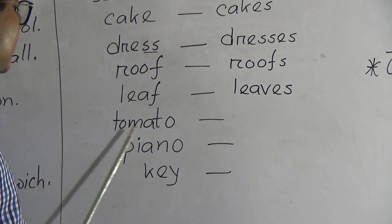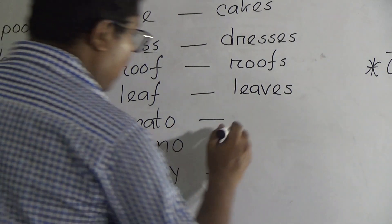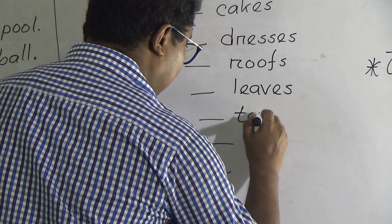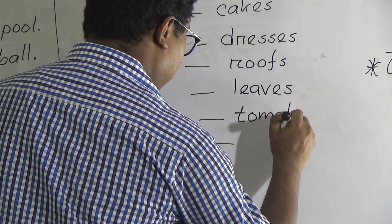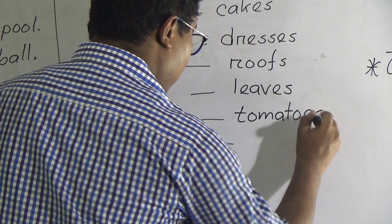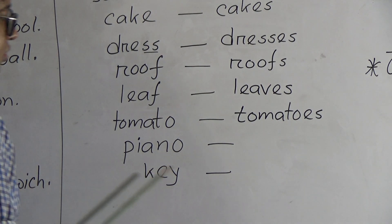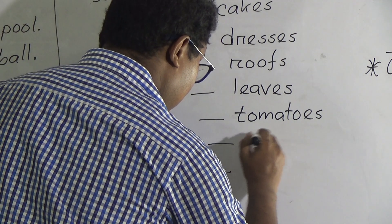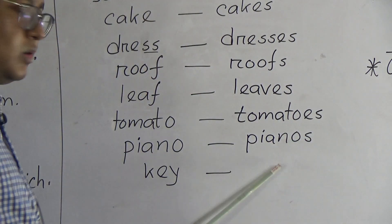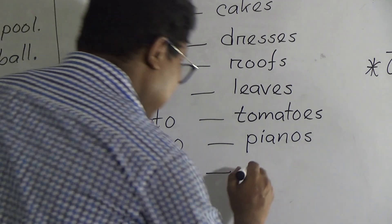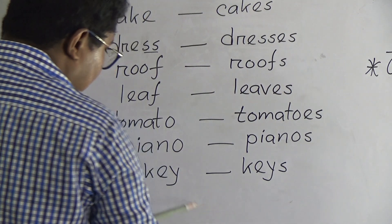Next one is 'tomato'. If a word ends with O, we have to add ES after the noun. So tomato becomes 'tomatoes' — T, O, M, A, T, O, E, S. Next one is 'piano' — 'pianos', P, I, A, N, O, S. Piano, pianos. And 'key' — 'keys'. One key, many keys.